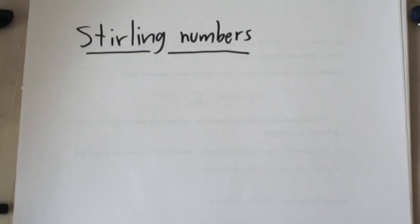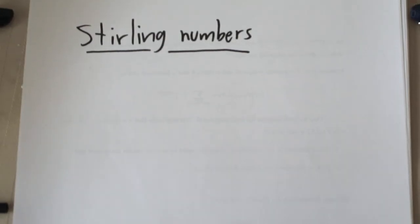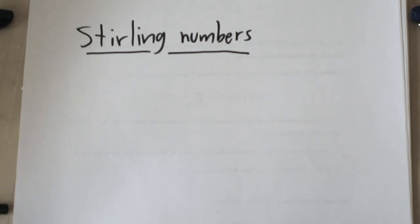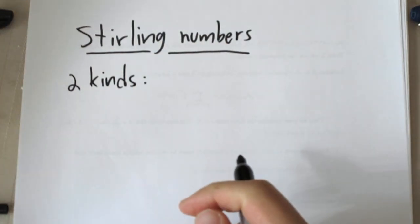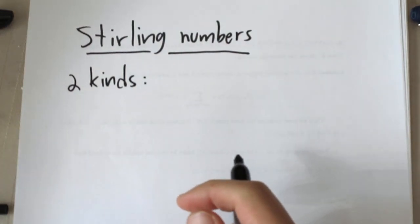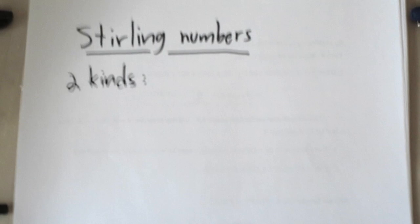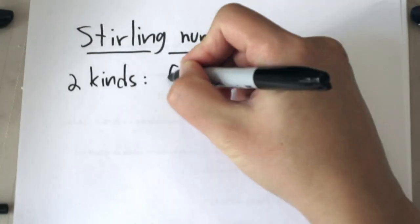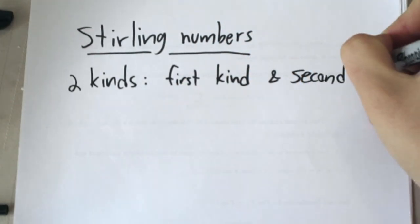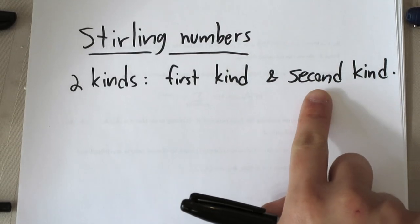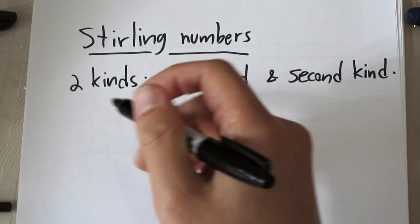There are two types of Stirling numbers — of the first kind and of the second kind. We're actually going to talk about the second kind first because it's easier to understand.